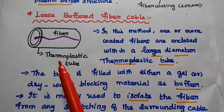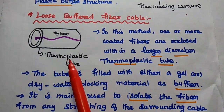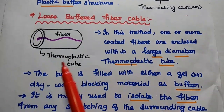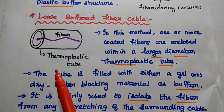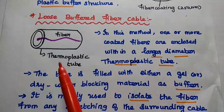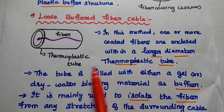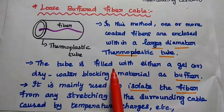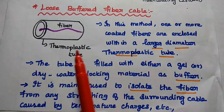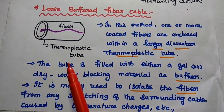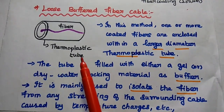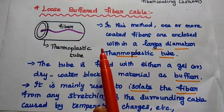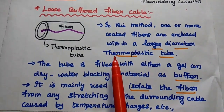This thermoplastic tube is filled with either a gel or dry water blocking material as a buffer to protect the fiber cable. It is mainly used to isolate the fiber from any stretching of the surrounding cable due to environmental changes.